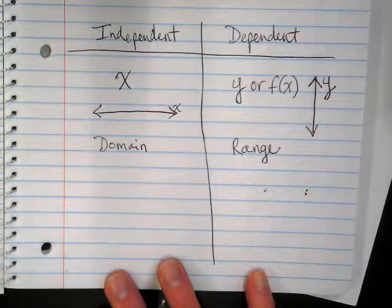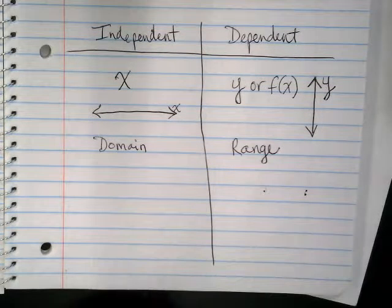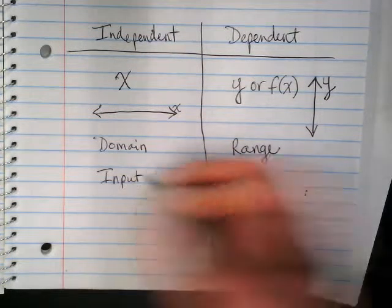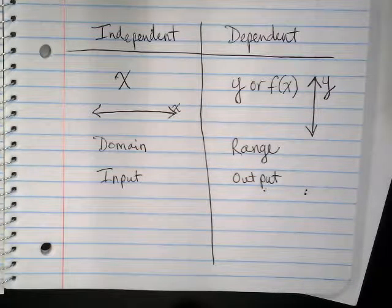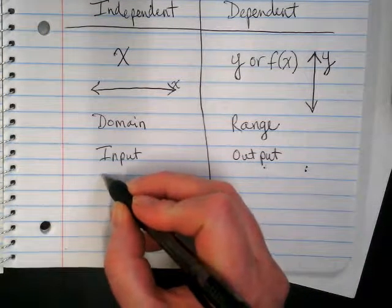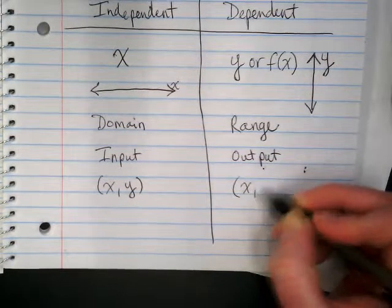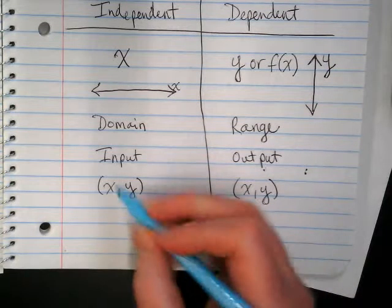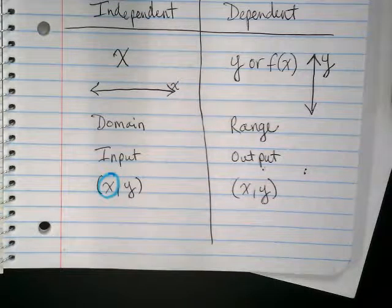You guys have known these ever since you started doing function machines in elementary school. They just didn't call them all these fancy things back then. You called it input and output. When we're dealing with input and output, we're dealing with XY pairs for both of these. One of them is the input, it's the X, and one of them is the output.